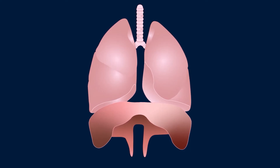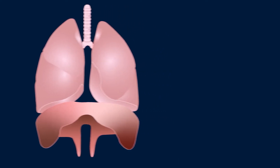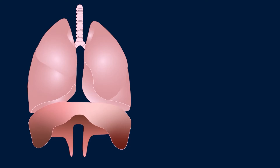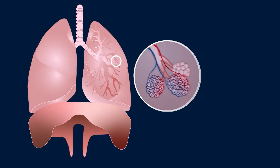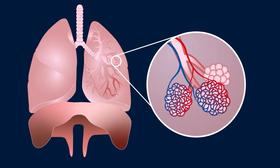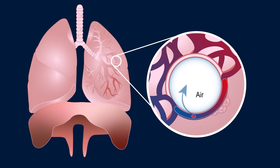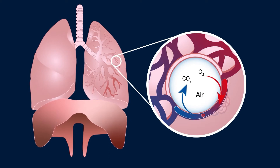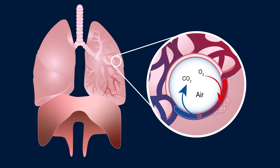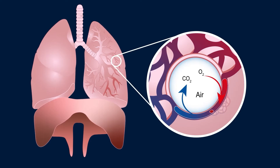So how does this work? Well as we breathe in, the diaphragm and intercostal muscles contract, increasing the size of the thoracic cavity, drawing air into the lungs. As the lungs expand, oxygen diffuses into the bloodstream via a vast network of capillaries which cover almost the entire surface of the lung, with carbon dioxide moving in the opposite direction. Expiration then occurs passively as the muscles relax and the thoracic cage decreases in size, forcing air out and removing this carbon dioxide into the atmosphere.